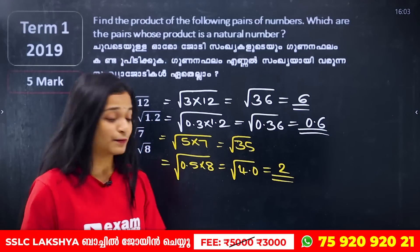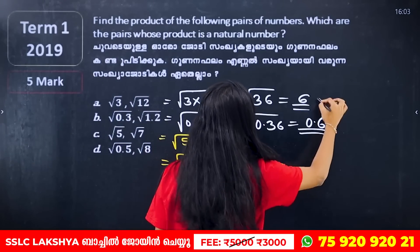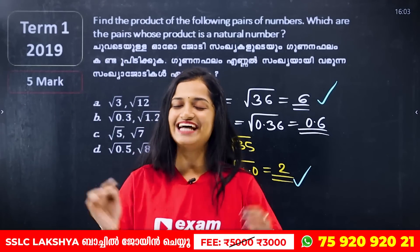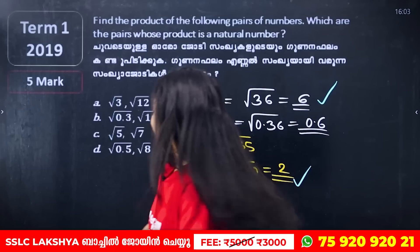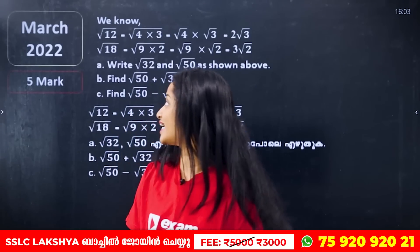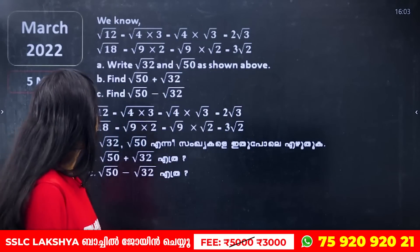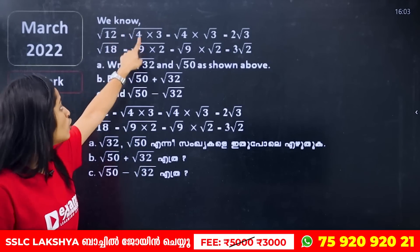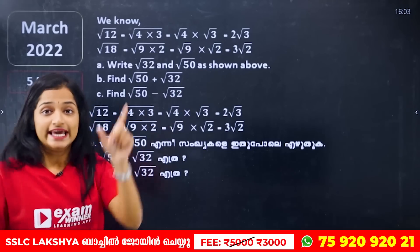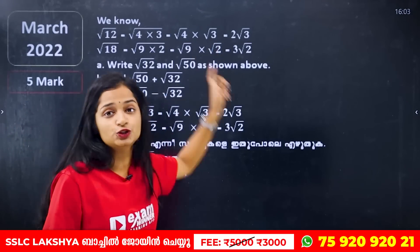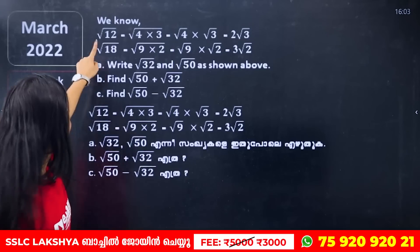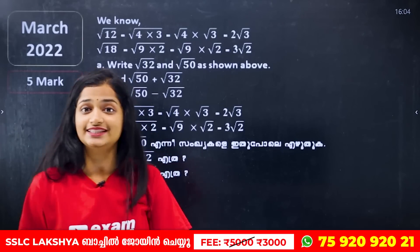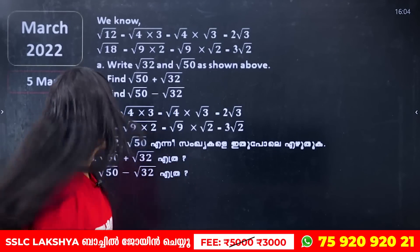What are natural numbers? 2 is a natural number. How about root of 12? Root of 12 equals root of 4 into 3, which is root 4 into root 3. If you consider root of 18, that is root of 9 into 2.